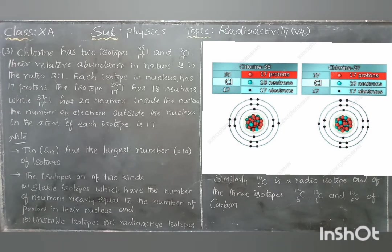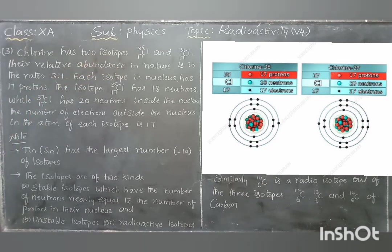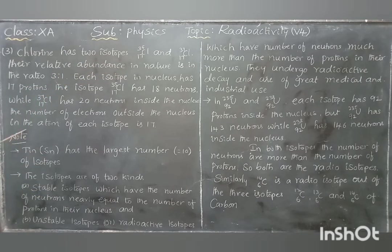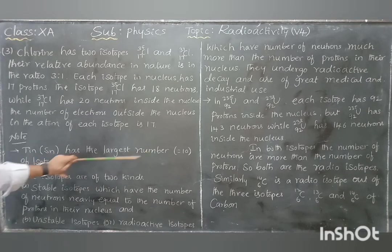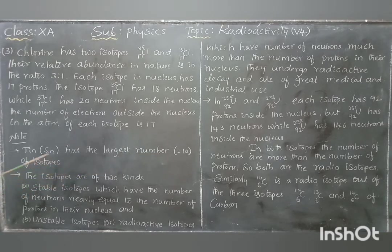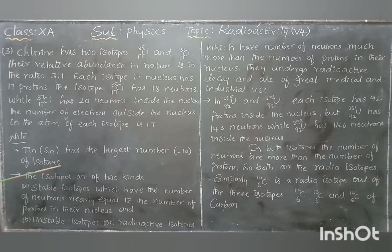Next, very very important — tin, which is a Latin name, has the largest number of isotopes: 10 different types of isotopes in nature.